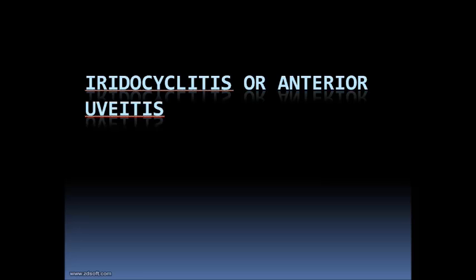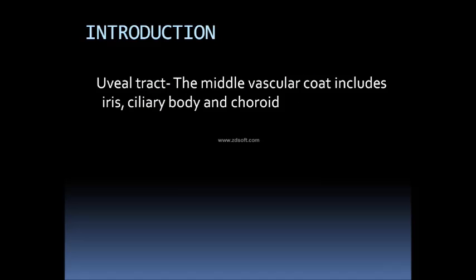We are going to discuss another very important topic in ophthalmology: iridocyclitis, or anterior uveitis. Uveitis means the inflammation of the uveal tract, which is the middle vascular layer of the eye, including the iris, ciliary body, and choroid. Because it is vascular, it is at risk for inflammation due to infection or inflammation anywhere in the body.